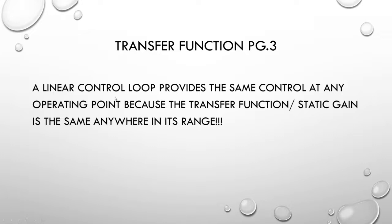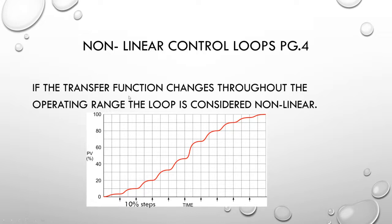A linear control loop will provide the same control at any operating point because the transfer function and the static gain is the same anywhere in its range. When we get into non-linear control loops, this tells us that the transfer function changes throughout the operating range. Using 10% steps, you'll see that one step made about a 4% change, another made about 6%, and another made about 10%. So everywhere along this line, the static gain is different — and that's what we're addressing in this lecture.